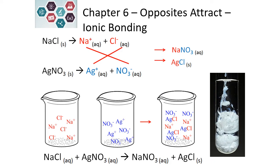Let's look at what's happening on a submicroscopic scale. In this new example, we have sodium chloride, which is table salt. When we write the dissociation reaction, we get sodium with a positive charge and chloride with a negative charge. We also have another beaker containing silver nitrate, which is also soluble, so we have a dissociation reaction for silver and nitrate. When we combine these, the silver combines with the chloride and the sodium potentially combines with the nitrate — we are swapping partners, swapping cations with anions.